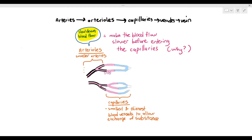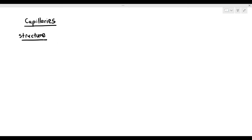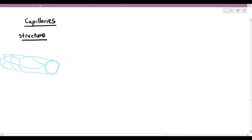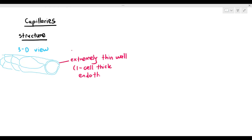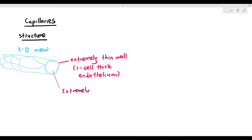So talking about the capillary, I'm drawing out a three-dimensional structure of a capillary. As you can see, the capillary has very thin walls. The wall is so thin that we just call it a one-cell thick endothelium. That is how you describe the wall of the capillary. And it has an extremely narrow lumen.